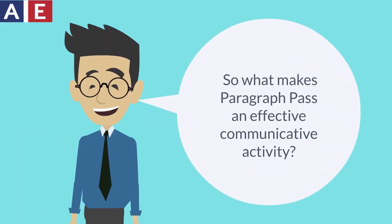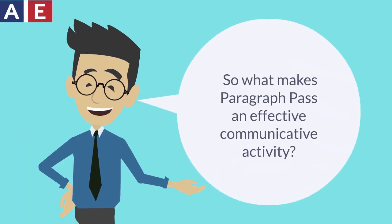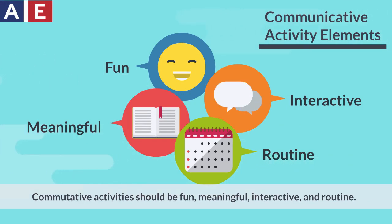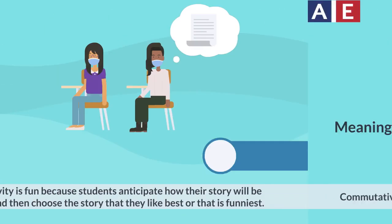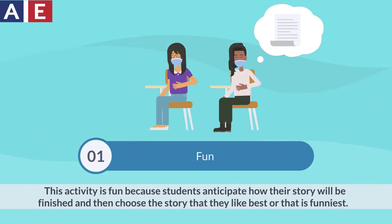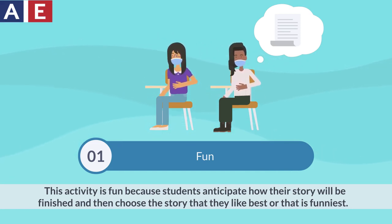So, what makes Paragraph Pass an effective communicative activity? Communicative activities should be fun, meaningful, interactive, and routine. This activity is fun because students anticipate how their story will be finished and then choose the story that they like best or that is funniest.